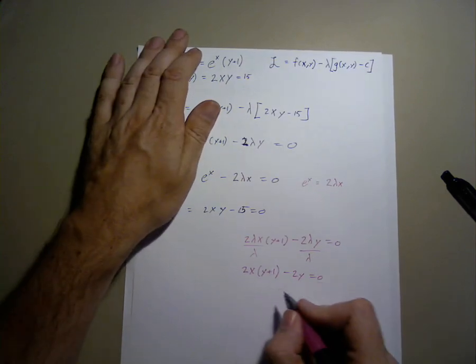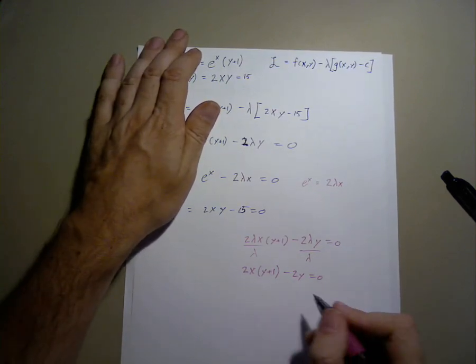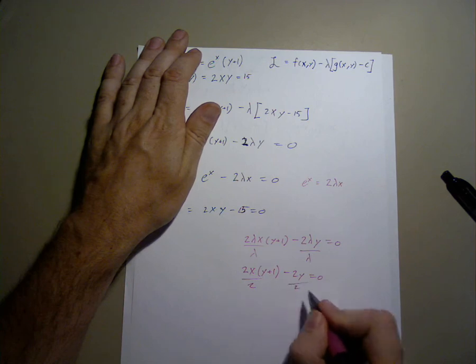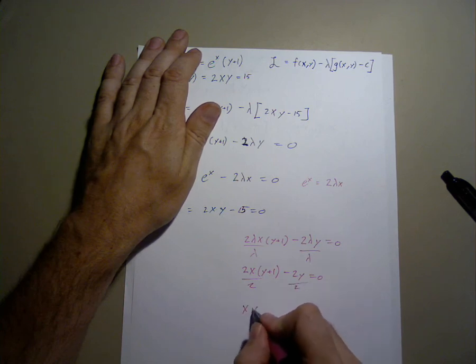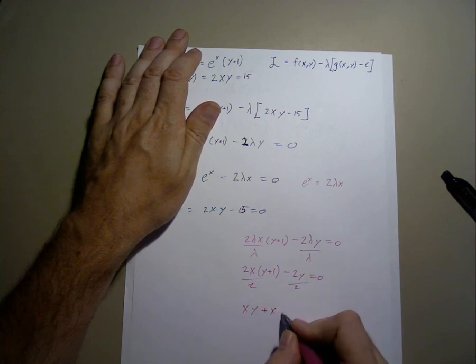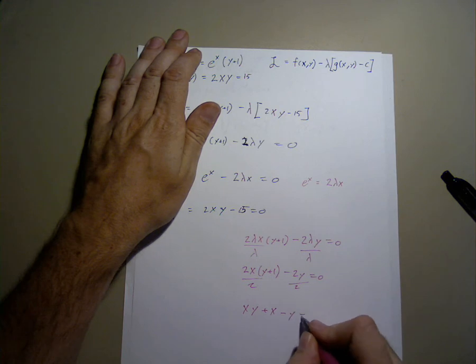To simplify this, we can expand and divide both sides by 2 as well, xy plus x minus y equals 0.